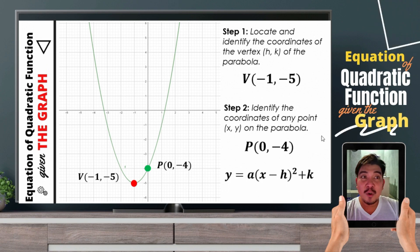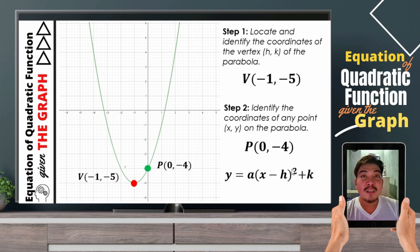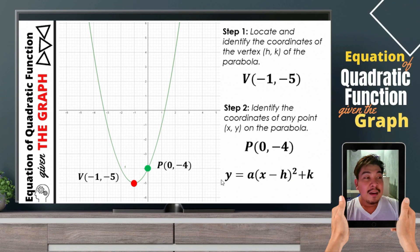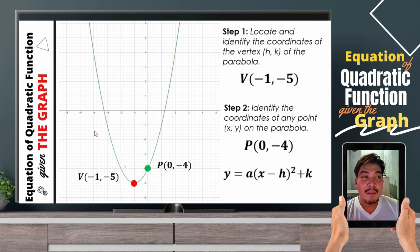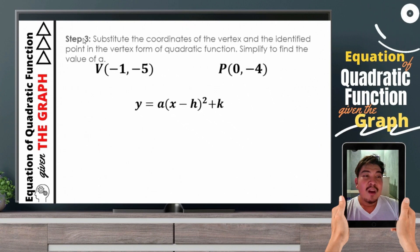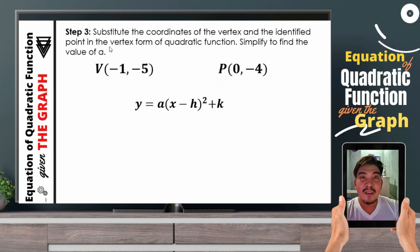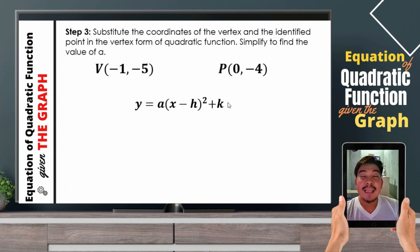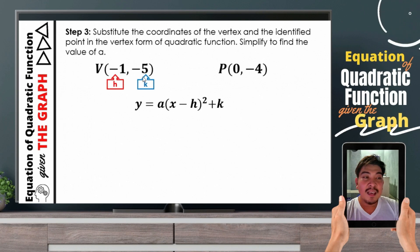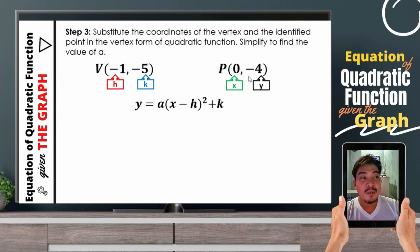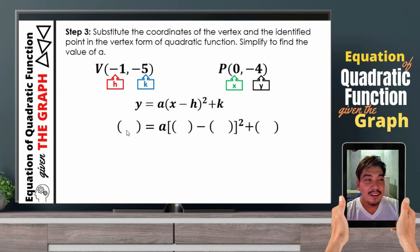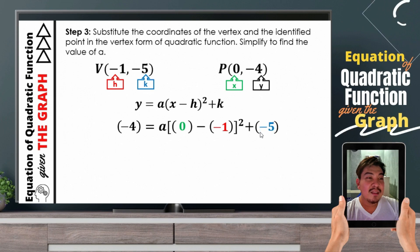Next, we will be using our vertex form of the quadratic function given by y is equal to a times the square of the binomial x minus h plus k, in order for us to get the equation of this quadratic function described by the parabola. We need to substitute the coordinates of the vertex and the identified point in this equation. Then, we need to simplify the equation in order for us to get the value of a. So h here is negative 1, k is negative 5, x will be 0, and y will be negative 4.